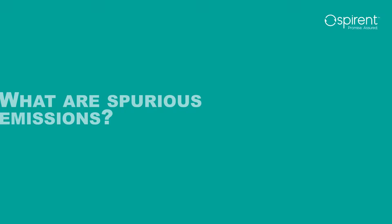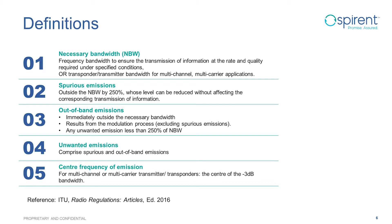So what are spurious emissions and how do we test them? To answer these questions we need to establish some key definitions from the ITU regulations. The first is the necessary bandwidth of a device, which is the frequency bandwidth required for information transmission. Spurious emissions are those emissions outside the necessary bandwidth by a factor of 250%. Out-of-band emissions are immediately outside the necessary bandwidth, and both spurious and out-of-band emissions are classified as unwanted emissions.